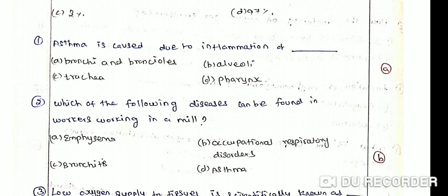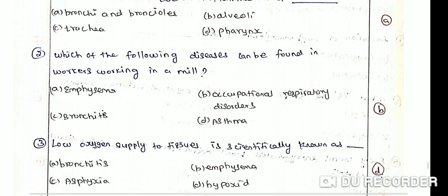Which of the following diseases can be found in workers working in a mill? Option A: Emphysema. Option B: Occupational respiratory disorders. Option C: Bronchitis. Option D: Asthma.